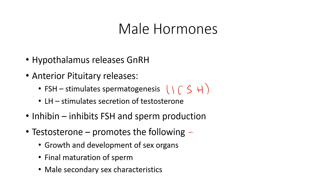Testosterone is made in the testes, specifically in the interstitial cells between those seminiferous tubules. The job of testosterone is to help mature sperm, to help grow and develop sex organs especially when a boy is going through puberty, and to help a male develop secondary sex characteristics such as a deeper voice, male hair patterns on the body such as axillary hair in the armpits or pubic regions. Skin becomes thicker with testosterone, and bones will also grow in response to testosterone, as well as skeletal muscle. Testosterone also increases the blood supply — there are things happening with testosterone that females don't see because they lack it.